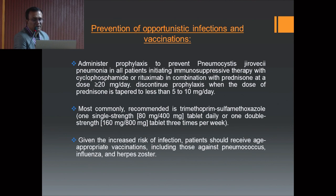Prophylaxis to prevent Pneumocystis jirovecii pneumonia is recommended for all patients on immunosuppressive therapy with cyclophosphamide or rituximab in combination with prednisolone at a dose more than 20 mg per day. Prophylaxis should be discontinued when prednisolone is tapered to less than 5 to 10 mg per day. The most commonly recommended regimen is co-trimoxazole single strength daily or double strength every alternate day thrice weekly. Given the increased risk of infection, patients should receive appropriate vaccination including against pneumococcus, influenza, and herpes zoster.